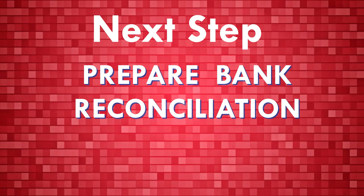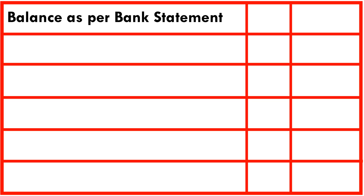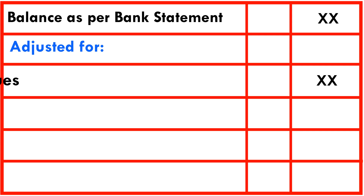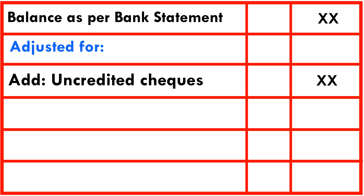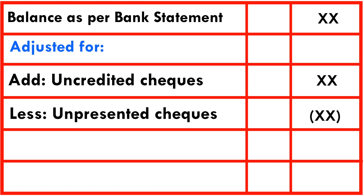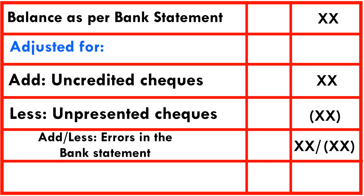The next step, after updating the cash book, is to prepare the bank reconciliation statement. For this, we start with the balance as per the bank statement, adjusted for: add uncredited checks, because this is a receipt; less unpresented checks, because this is a payment; and then finally, add or less errors in the bank statement.